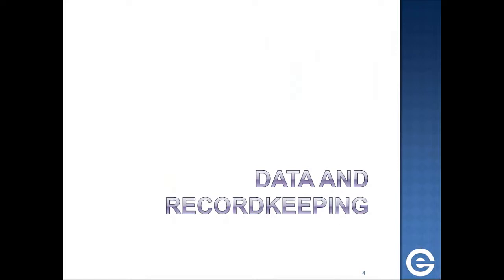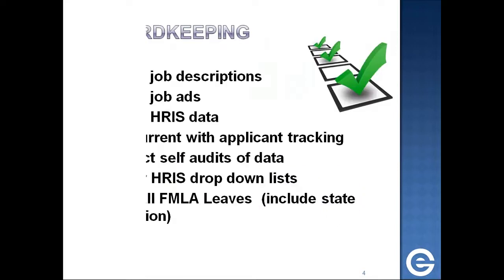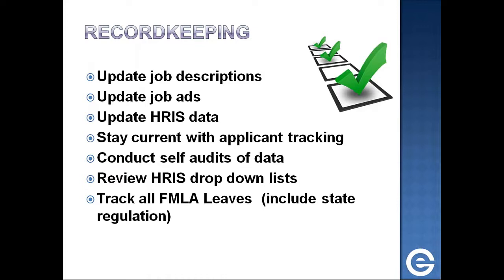We're going to talk first in our plan implementation about data and record keeping. There are things you need to do throughout the year, and there are tasks you need to do once a year. We gave you a checklist as a handout so you can use that to follow along. The first thing we want to talk about is record keeping, because your data is key to your Affirmative Action Plan being not only in compliance, but making sure that your reports reflect the best type of report you can give the OFCCP if you're audited.